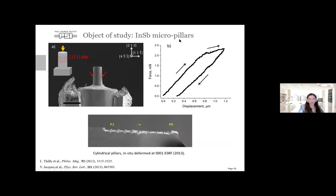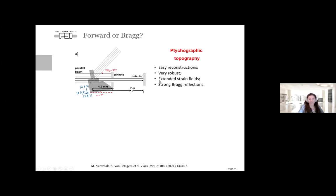We chose indium antimonide micro pillars that were FIB-milled from a single-crystalline wedge and compressed to the beginning of plastic deformation, as seen on a force-displacement curve. These were measured with a micro-compression device prior to measurement. The sample is 2 microns thick. Compressing along the [213] crystallographic orientation should activate a single-slip deformation system—an easy first test object because we know exactly what should happen.